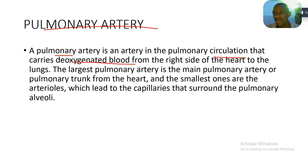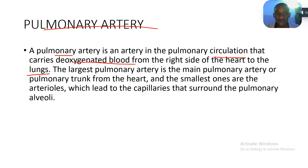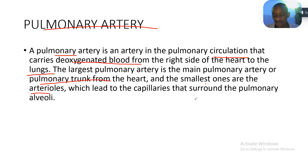Since the pulmonary artery is carrying deoxygenated blood, it carries it to where that blood can get oxygen and become oxygenated — and blood gets oxygen in the lungs. So the pulmonary artery carries deoxygenated blood to the lungs. The largest pulmonary artery is the main pulmonary artery, or the pulmonary trunk, from the heart. The smallest ones are the arterioles, which lead to the capillaries surrounding the pulmonary alveoli. The main thing to know is that the pulmonary artery carries deoxygenated blood.